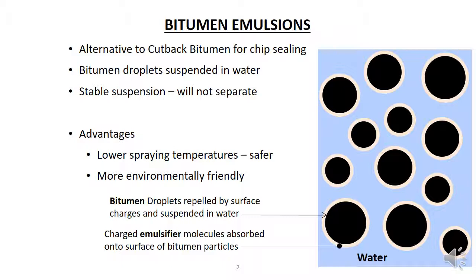If the two substances were combined alone, the water and bitumen would settle out as two distinct layers. However, if an emulsifier is added to a bitumen and water mix, and the mix is thoroughly agitated, then a stable bitumen emulsion is formed. As illustrated in the diagram, the fine droplets of bitumen coated by the emulsifier are suspended in water.